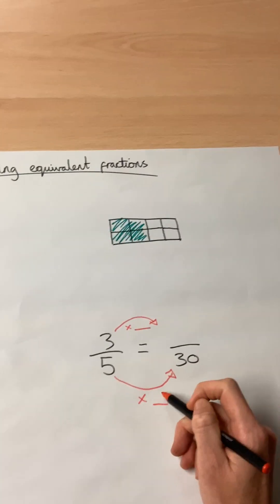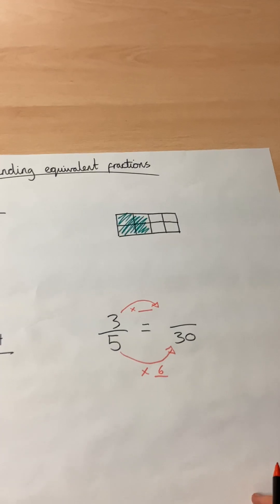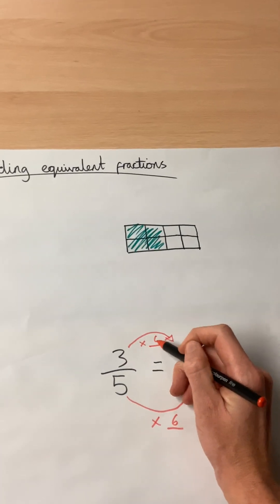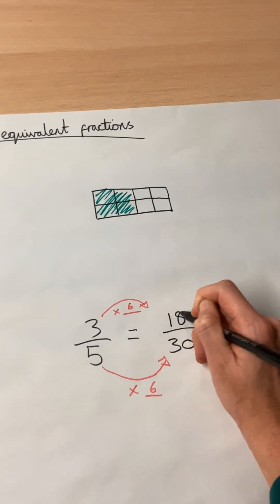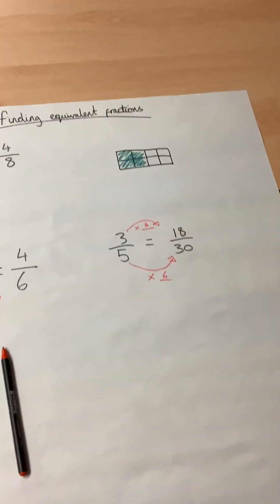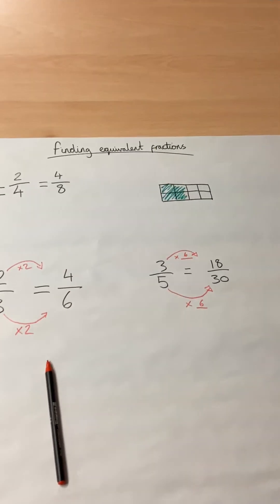So, I have times by six. So, I then need to do three times six to give myself eighteen. So, three fifths is equal to eighteen thirtieths.